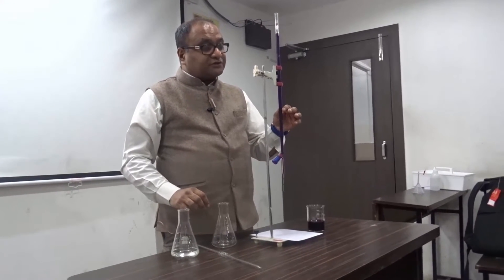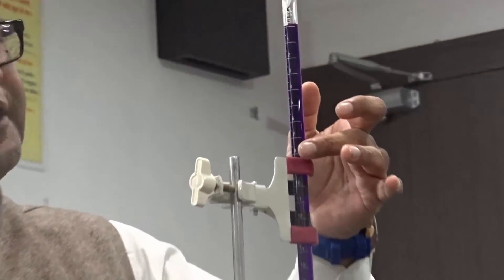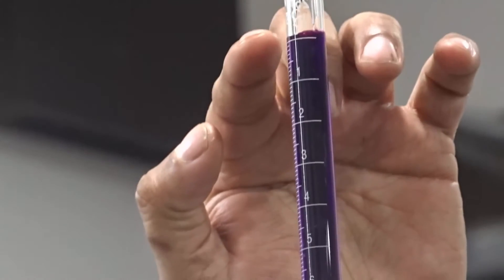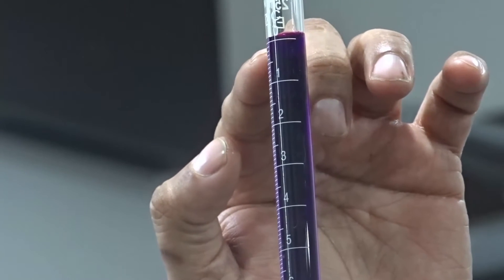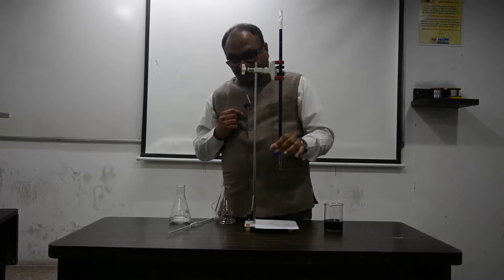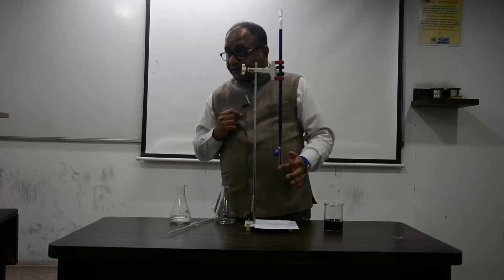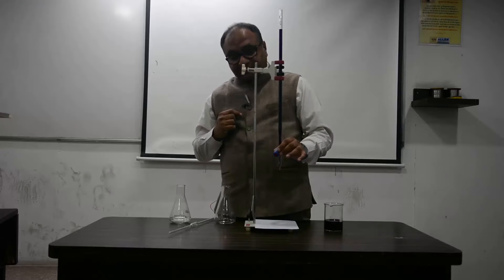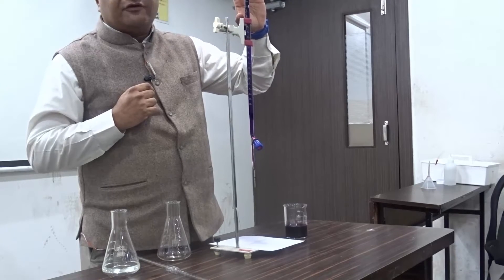We have taken the known solution — the KMnO4 solution whose concentration is known — in an instrument called the burette. If you zoom in, you will notice markings and readings on it. Right now the KMnO4 solution is set so that the lower meniscus is touching the zero mark of the burette. The burette has a stopcock; by opening and closing it, I can measure the volume of KMnO4 solution used.